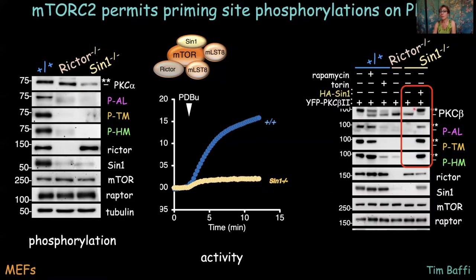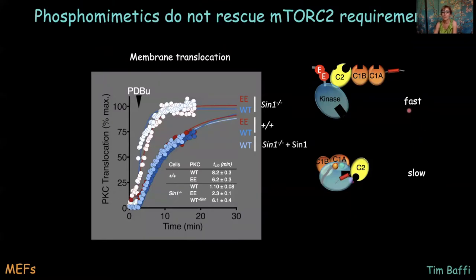We can rescue this phosphorylation by adding back SIN1. In SIN1-minus-minus MEFs, PKC is a faster mobility species with no phosphates. If we transfect in SIN1, we see a nice mobility shift indicative of quantitative phosphorylation at the two C-terminal sites, and phospho-antibodies confirm nice phosphorylation. We've known for many years that what TORC2 does is not directly phosphorylate the hydrophobic motif as has been proposed — because if we put phosphomimetics at the hydrophobic motif and even at the turn motif, that doesn't rescue the TORC2 requirement.